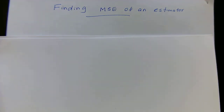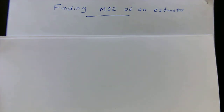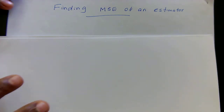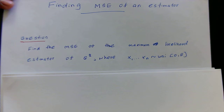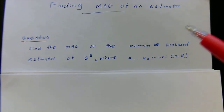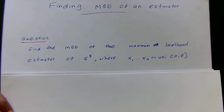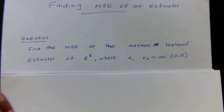In my last video I discussed the purpose of finding the MSE of a particular estimator. In this video I'm going to show an example of how to find an MSE for a particular problem. The question is as follows: suppose I have n random variables that are independently and identically distributed with a uniform distribution within the range from 0 to theta. I'm going to find the MSE of the maximum likelihood estimator of theta squared.